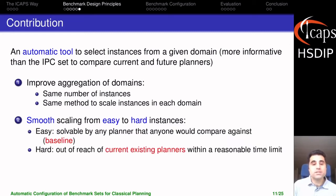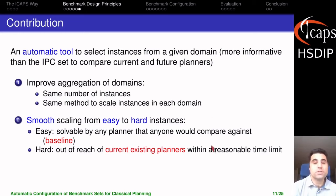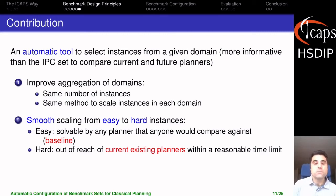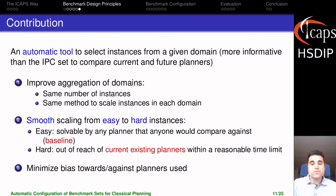You might notice that 'easy' and 'hard' actually depend on the planners. To define them, we will use a baseline and a set of state-of-the-art planners. We will say that an instance is easy if it's solvable by the baseline — solvable by any planner anyone would compare against. An instance is hard if it's out of reach of current state-of-the-art planners within a reasonable time limit. Having these definitions depend on concrete sets of planners introduces a risk of bias towards those planners, so we will keep this in mind and I will come back to this later.